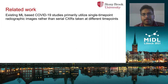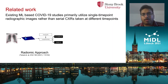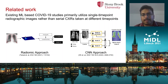Existing machine learning based COVID-19 studies primarily utilize single time point chest X-rays for a variety of tasks such as differentiating from viral pneumonia or outcome prediction. The previous approaches can be broadly grouped into two types. The first is a radiomic approach where radiomic features are extracted from lung segmentations followed by training a machine learning model to predict the COVID-19 outcome. The second is a CNN approach where architectures such as ResNet are used to extract features from lung segmentation patches and classify the output into classes of interest like COVID positive and negative.